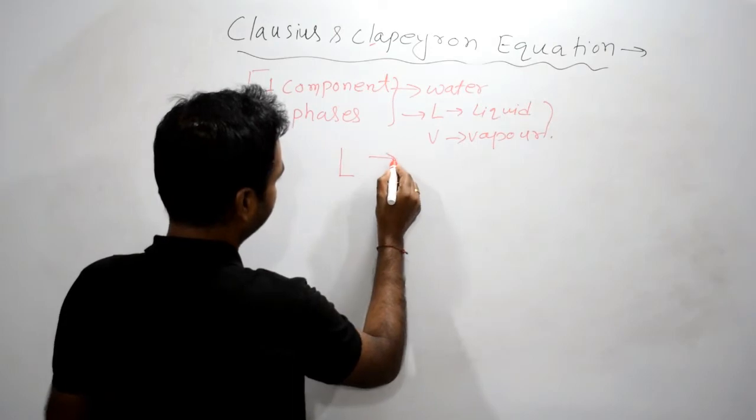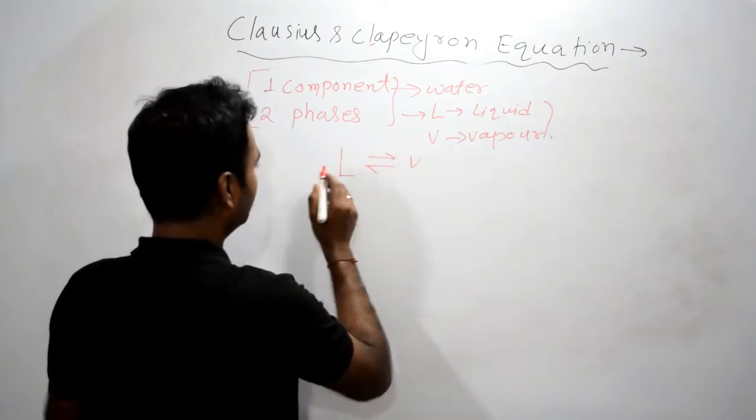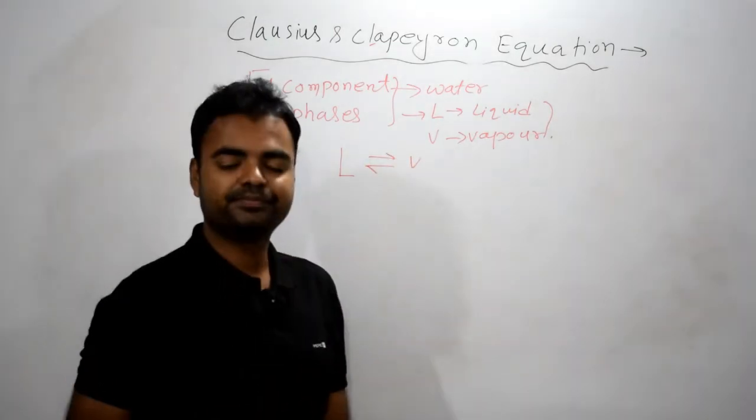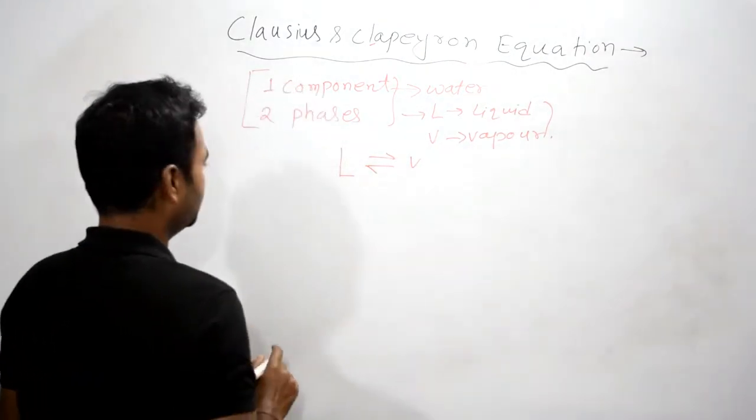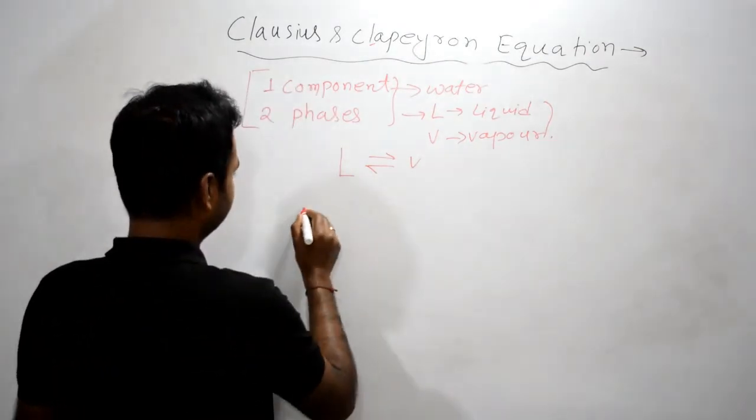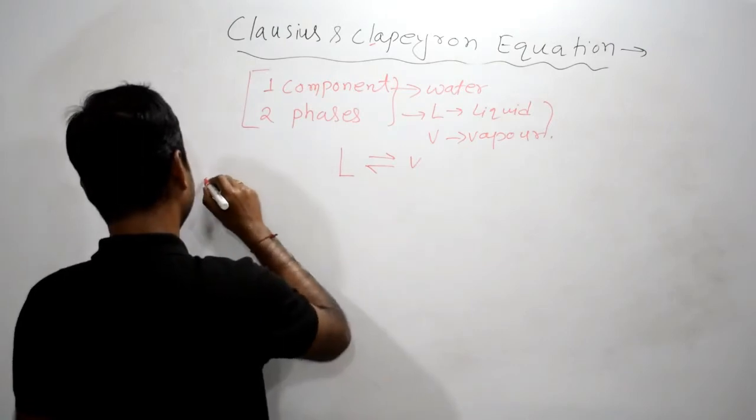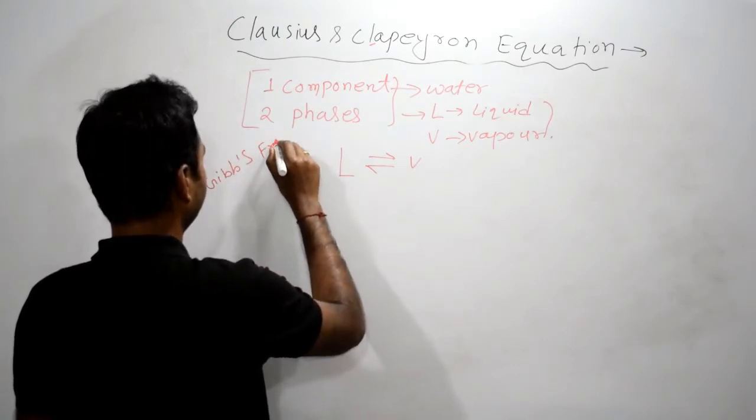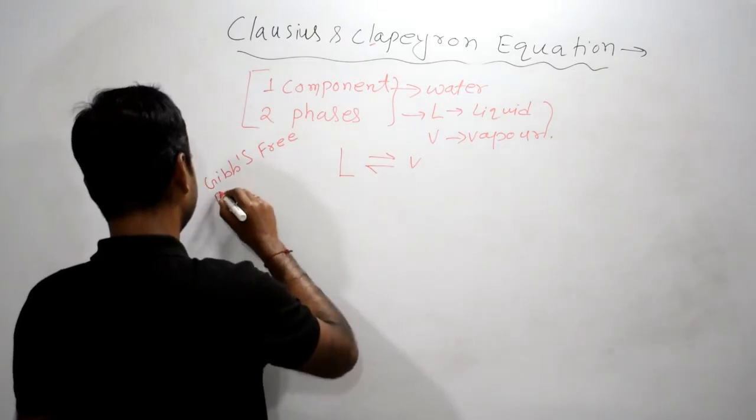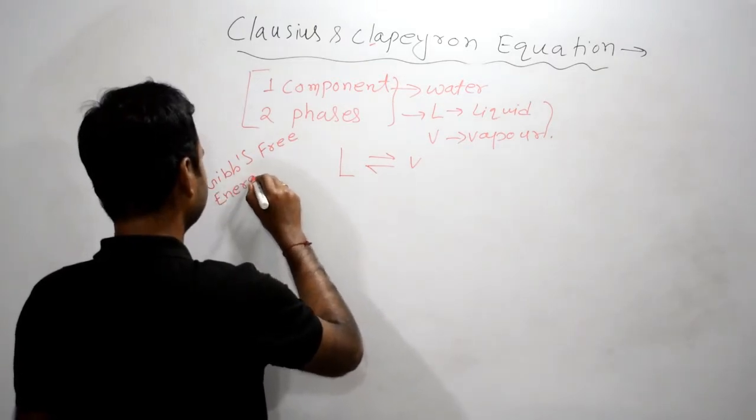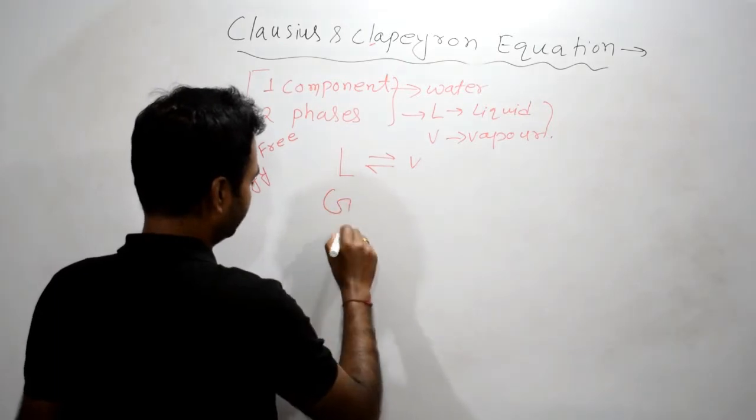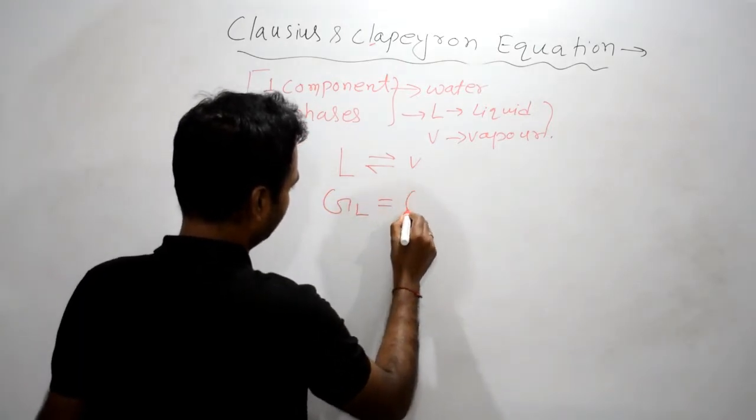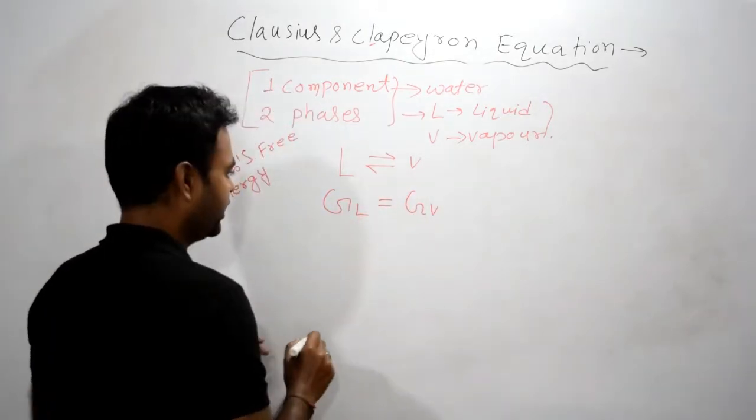Now let's come back to this point. Very important: here we are considering liquid and vapor both in equilibrium condition. We can write the equation in the form of Gibbs free energy, denoted by capital G: GL equals GV.